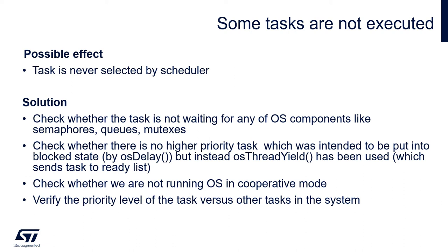Another scenario is that a higher-priority task is constantly in the run state. If it was intended to send this task to the blocked state, verify whether osThreadYield has not been selected instead of osDelay. Remember that the yield operation sends a task from run to ready state — not to blocked state. In such a case the higher-priority task is selected immediately for execution and lower-priority tasks will not run. The solution is to replace the yield function with, for example, osDelay(1). Also check whether cooperative configuration is set — if configUSE_PREEMPTION is disabled in FreeRTOSConfig.h, an active task will run until it calls yield or osDelay.